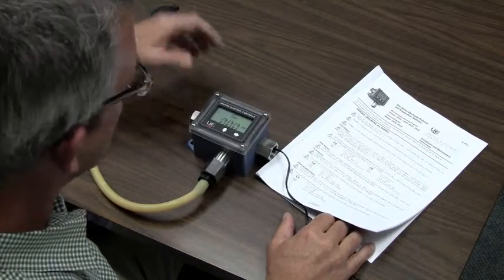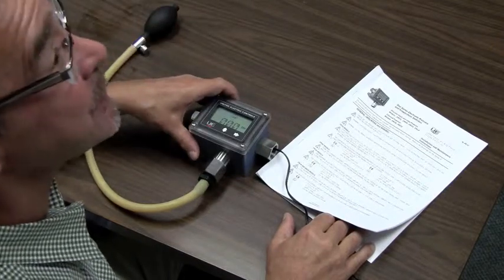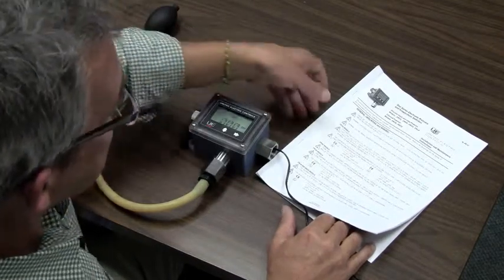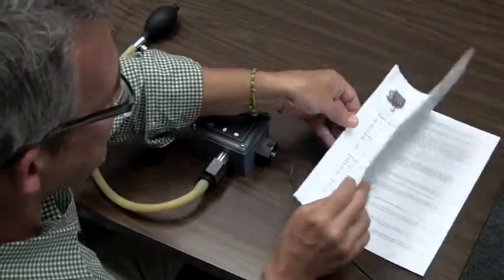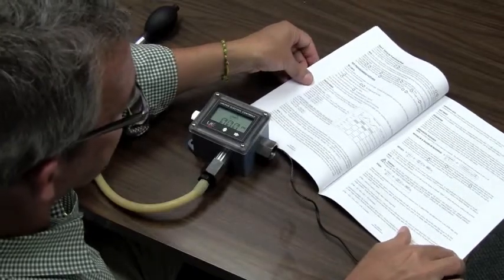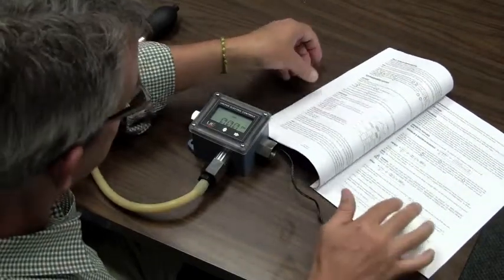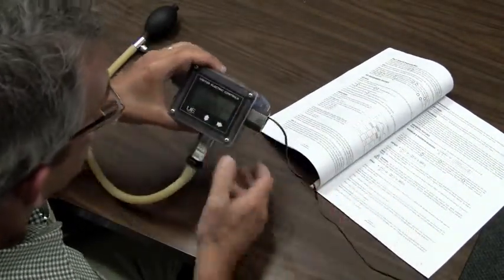Okay, so now I'll show you how to program the One Series for this compressor cycling application. Of course, I need the Installation and Maintenance Manual. If we turn to page 13, it shows us how to set the set point and the dead band settings.